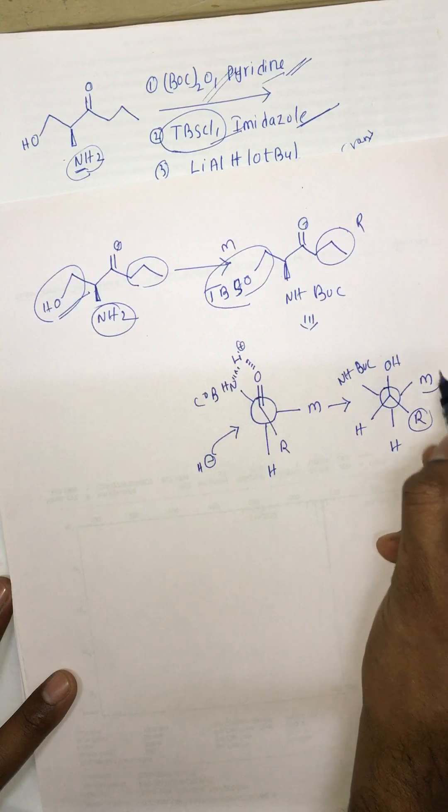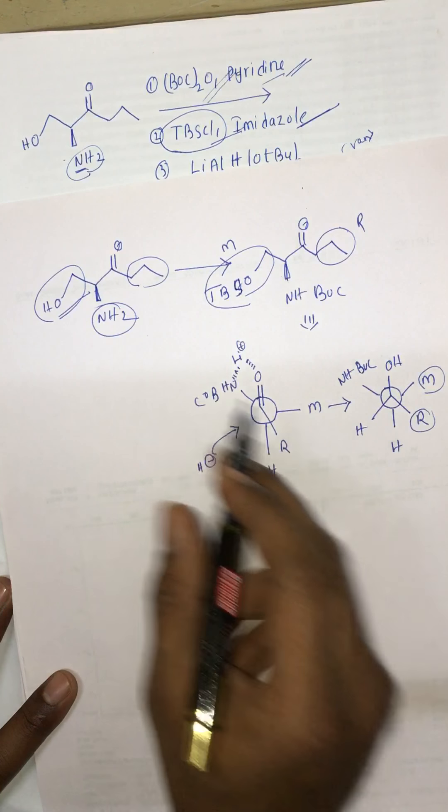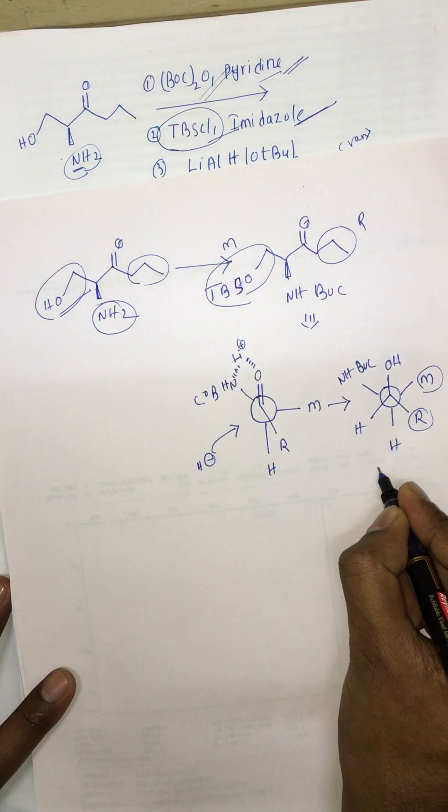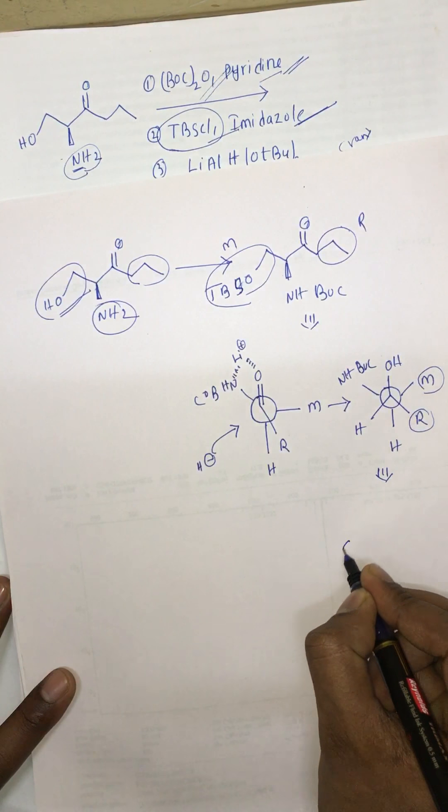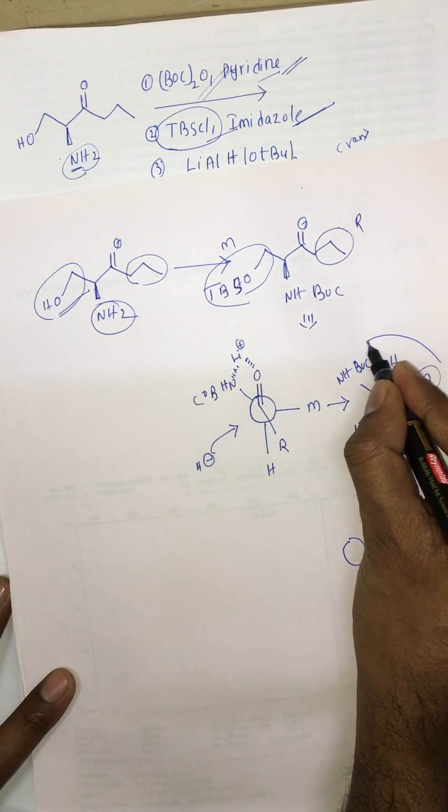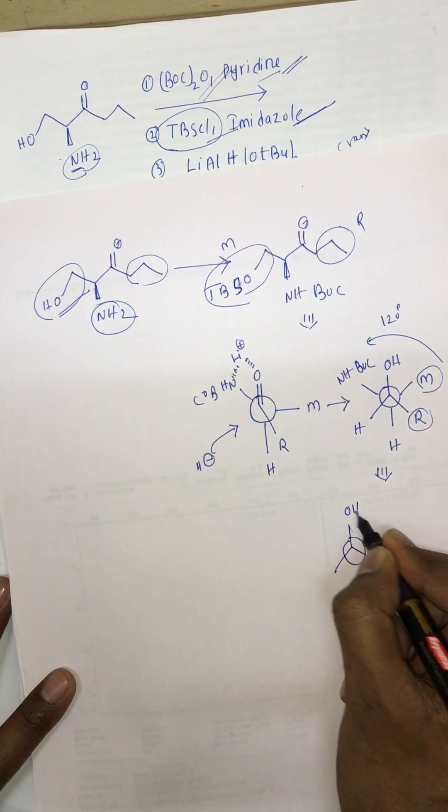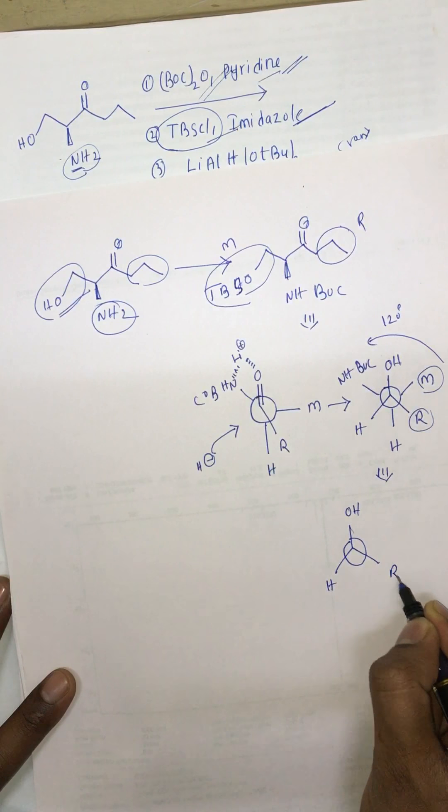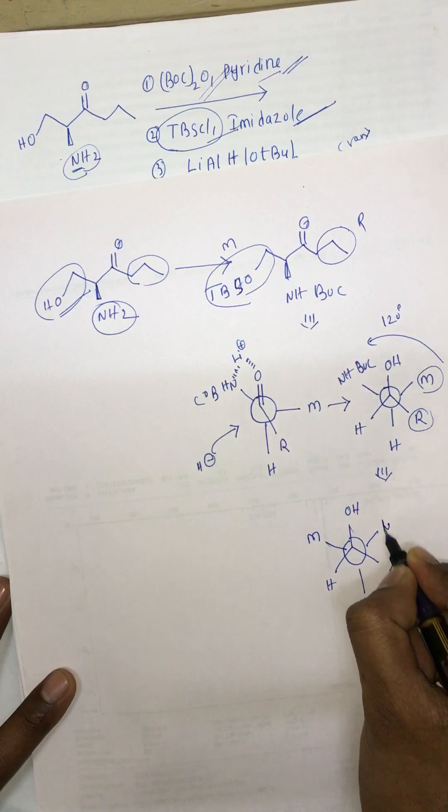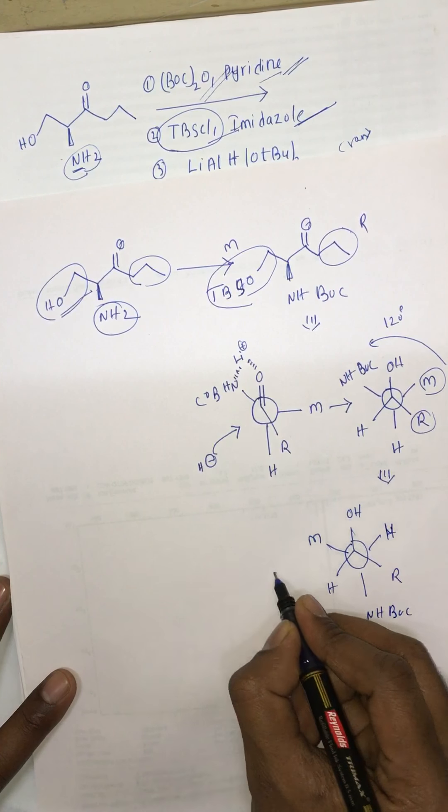If you want to bring these two groups onto the plane, there has to be anti-periplanar in Newman's projection. We will bring them into anti-periplanar by rotating the backside carbon by 120 degrees: OH, M, H, and NHBOC.